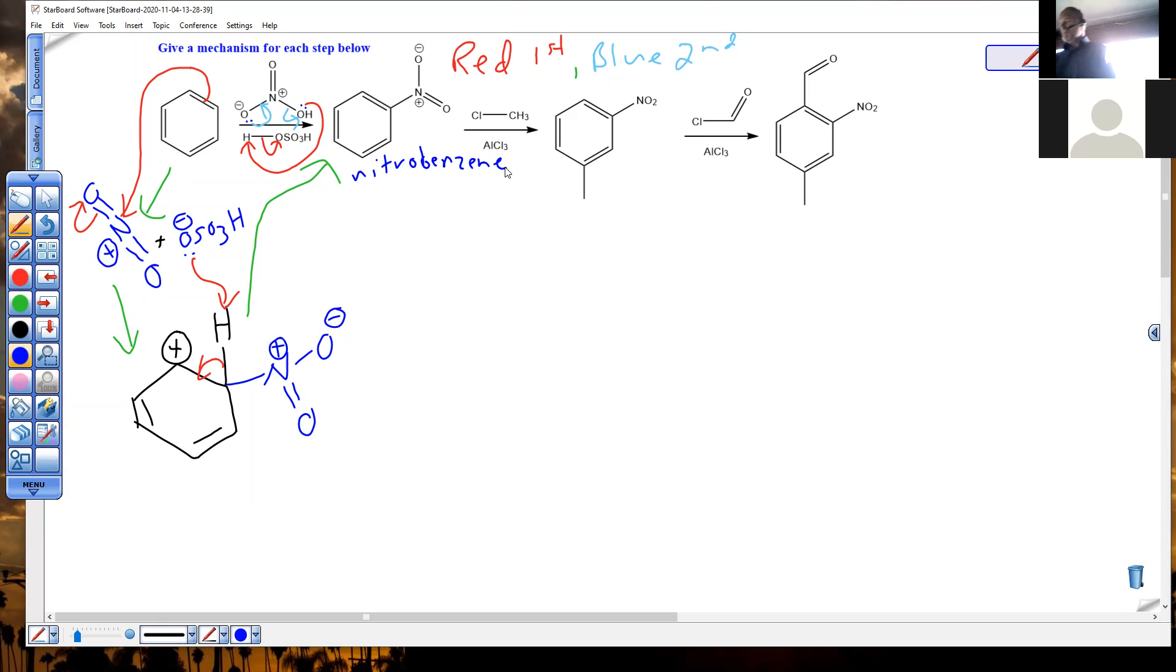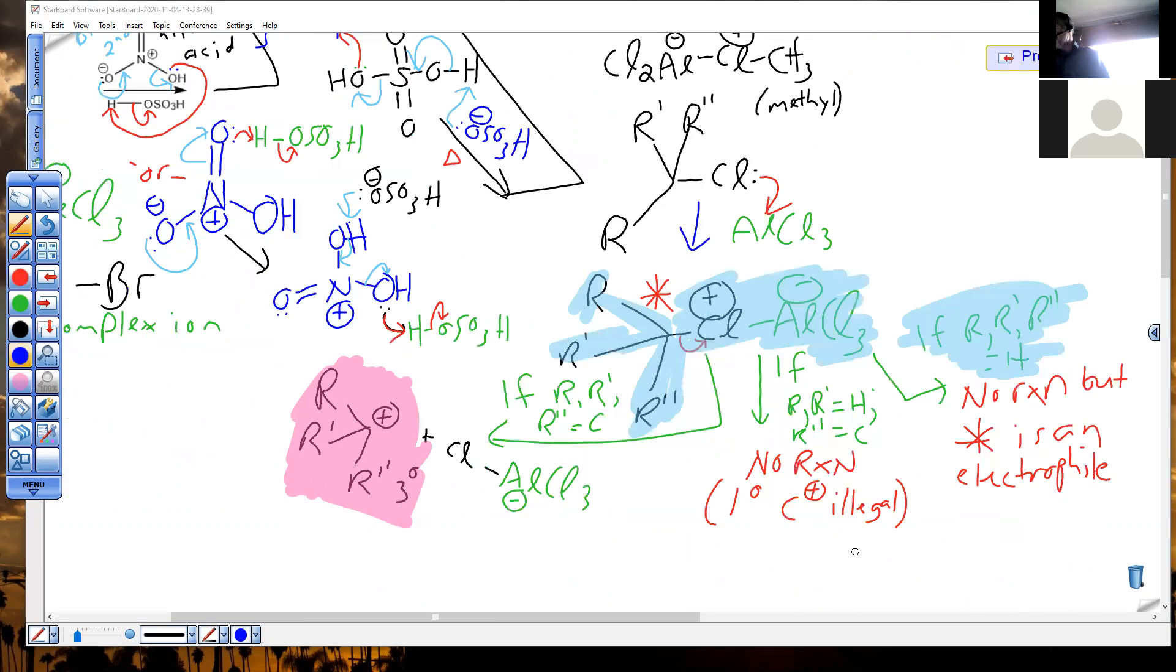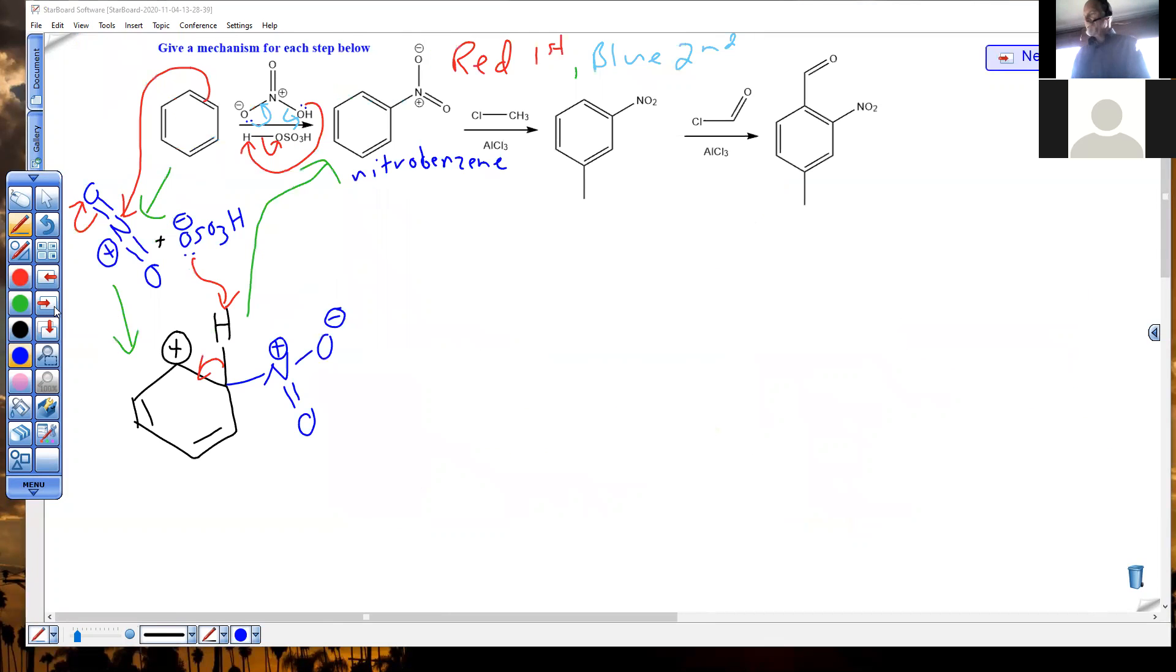Next reaction, what's our new group? It looks like a methyl group. Where'd this methyl come from? It came from chloromethane. And if you look back, this is the case where all three groups on the carbon are hydrogen. And we said what would happen if all three groups on the carbon, if R, R prime, R double prime equals H, no reaction, but star, this thing that we have to make is an electrophile because it's got a carbon with three H's on it and what is going to amount to an excellent leaving group.